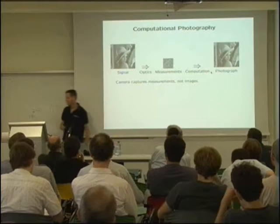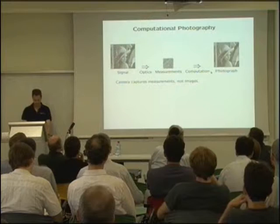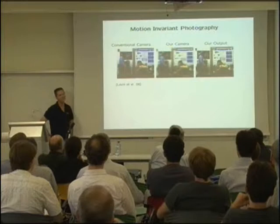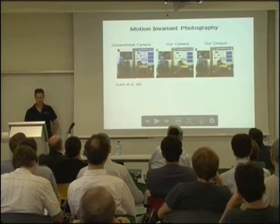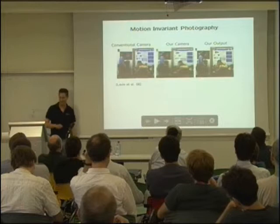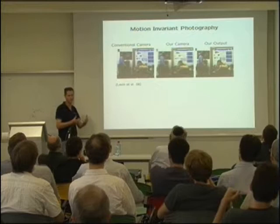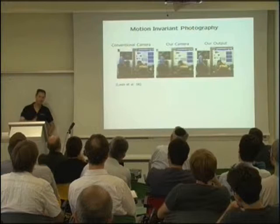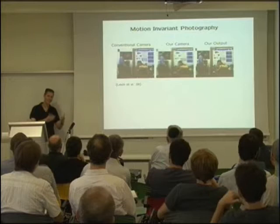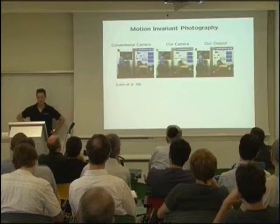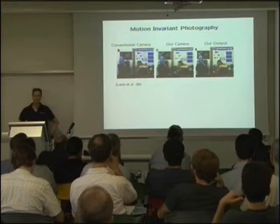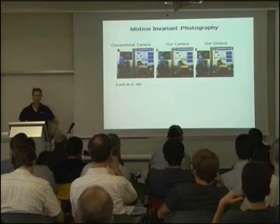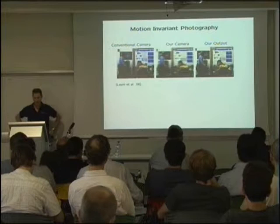Because before you develop the film, you're actually going to put a computer in the loop. So whatever numbers were captured, there's going to be a computer that will decode these numbers and give you a photograph in the end. This is a work of my former student Annette Levine, who was trying to solve the problem of motion blur. Their camera makes it so everything is blurred — both the static and moving parts. But because there's a computer in the loop, they can take this output, write an algorithm on it, and then everything is sharp.